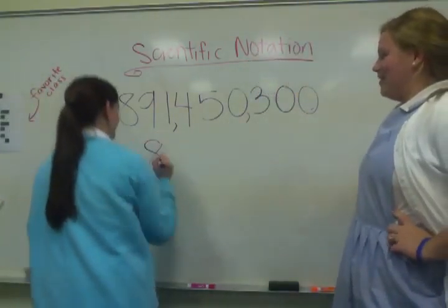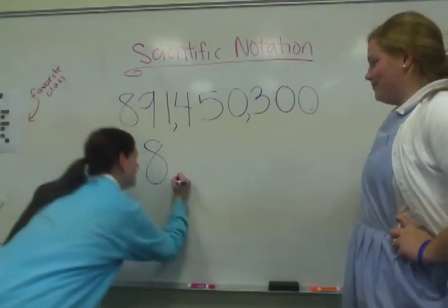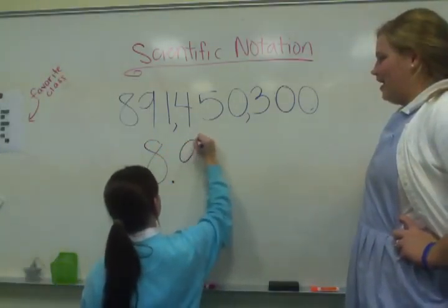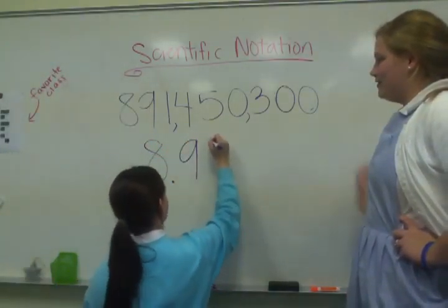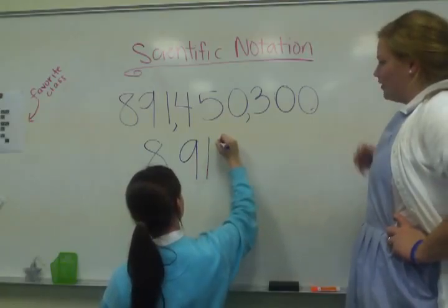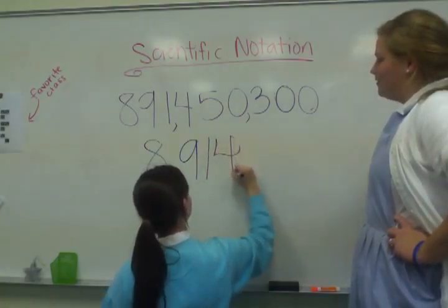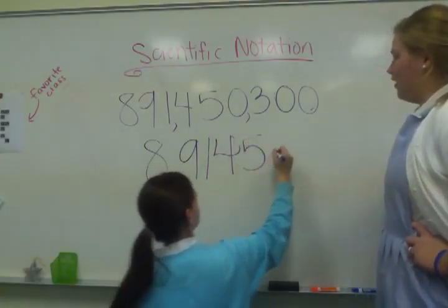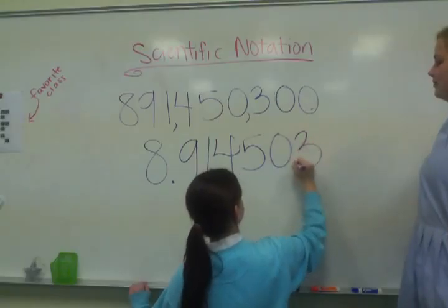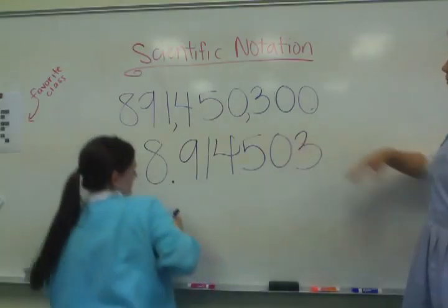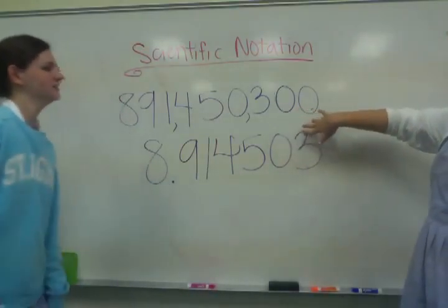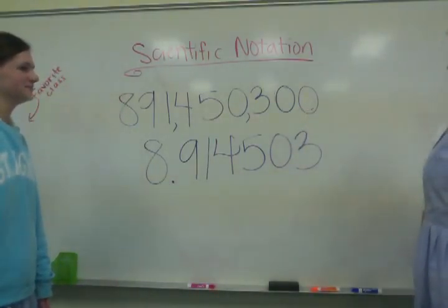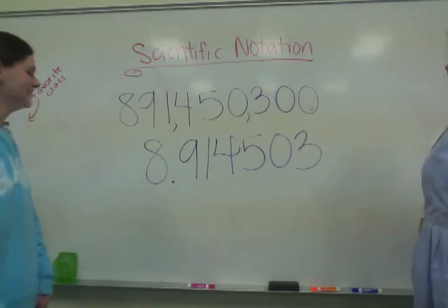And then you put a decimal. Put 9, 1, 4, 5, 0, 3. Why don't I do the last two zeros, Adrienne? Because those are trailing, and you just don't put them in there. Because they're unnecessary.